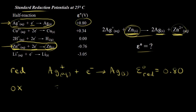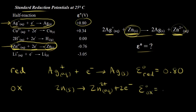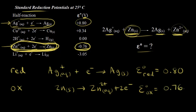So we start with solid zinc, and for solid zinc to turn into zinc two plus ions, we need to lose two electrons — loss of electrons is oxidation. We need to find the standard oxidation potential. Looking at our table, the standard reduction potential for this half reaction as written is negative 0.76 volts. Since we reversed this half reaction, we need to change the sign from negative to positive. So the standard oxidation potential for this half reaction is positive 0.76 volts.